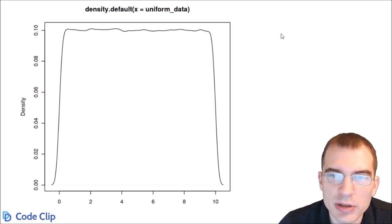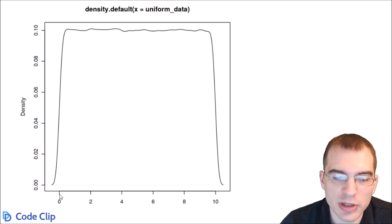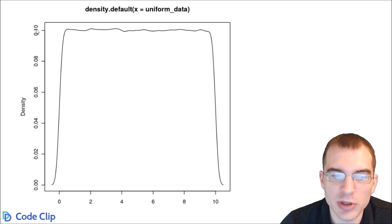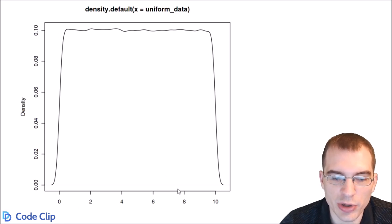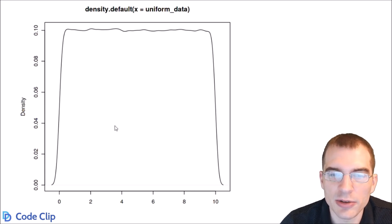It should be noted that the area under a probability curve like this always sums up to 1. Since we generated from 0 to 10 and the density is 0.1 and it's constant, multiplying those together — essentially integrating this square distribution — sums to 1. In general, if you check the area under any probability density curve, no matter what type it is, it always has to sum to 1.